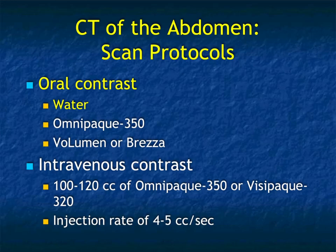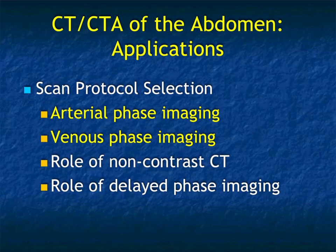If you're doing CT enterography, then Breeza is ideal. For IV contrast, either Visipaque or OmniPaque, around 100 to 120 cc. We like an injection rate of 4 to 5 cc per second. Depending on the situation, we'll do single phase or dual phase imaging. We do not do non-contrast scans — non-contrast scans are good for the kidneys, for stone disease, or evaluating a mass. And we rarely, if ever, do delayed phase imaging.